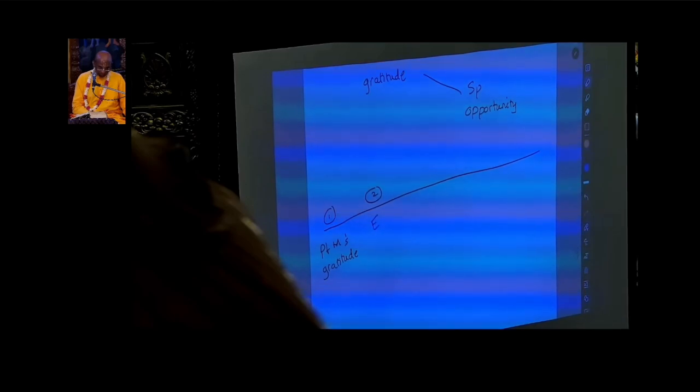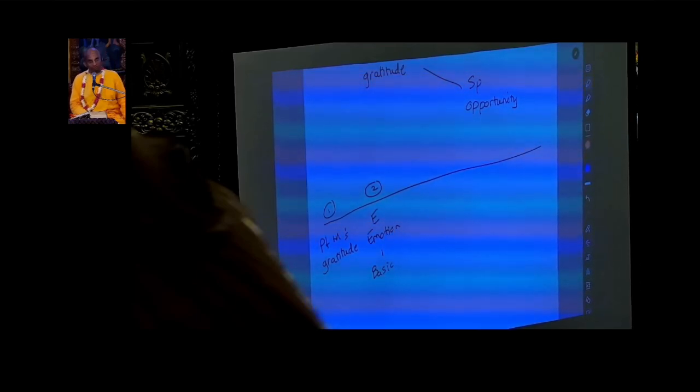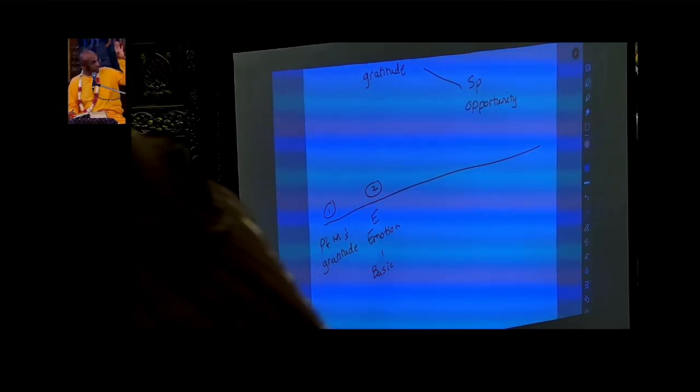E was emotion. So here, at least when good things happen in our life, we feel grateful. In one sense, this is the most basic level. And sometimes we may lack that also because we are not grateful that some good thing happened. We are resentful that it happened so late. So if that's happening to us,